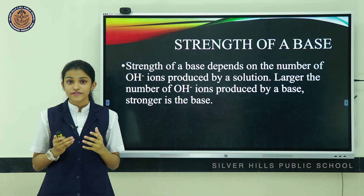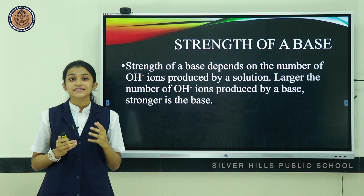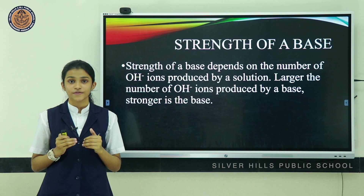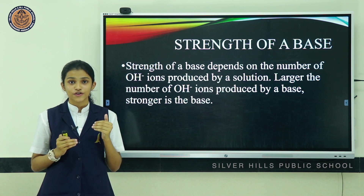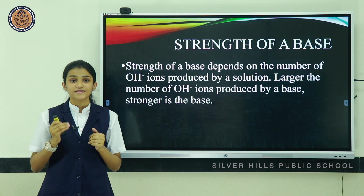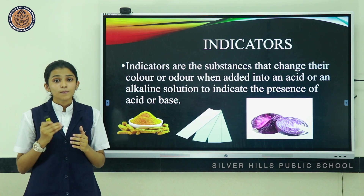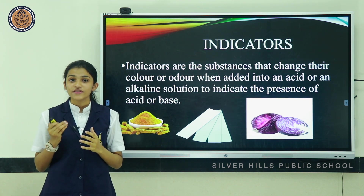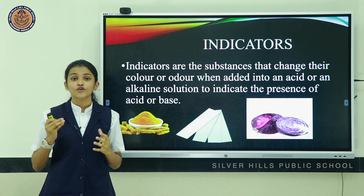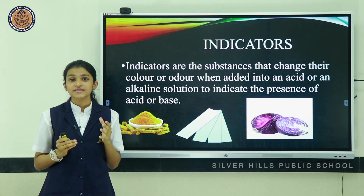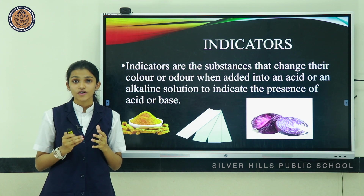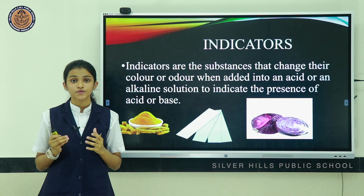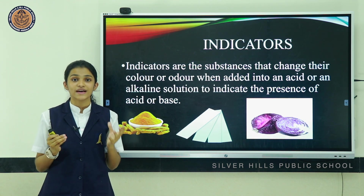The strength of a base depends on the number of hydroxide ions produced by a solution — the larger the number of hydroxide ions produced, the stronger the base. Moving on to indicators: indicators are those substances that change their color or odor when added into an acidic or alkaline medium, to indicate the presence of an acid or base.